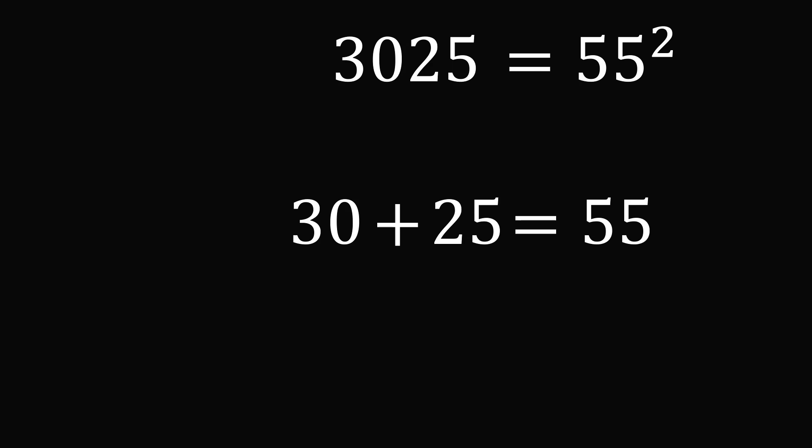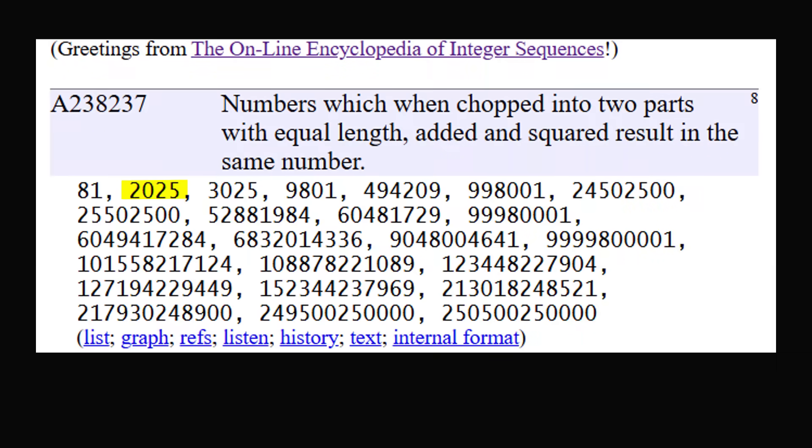I was curious what these numbers would be called, and mathematicians have come up with a unique name for them. They call them numbers which, when chopped into two parts with equal length, added and squared, result in the same number.